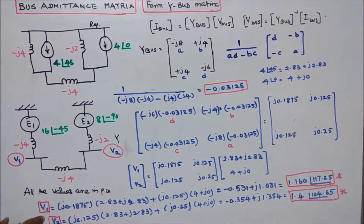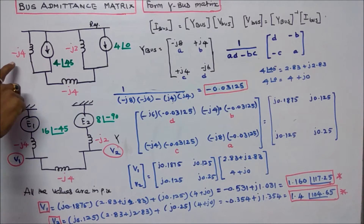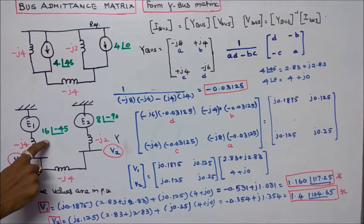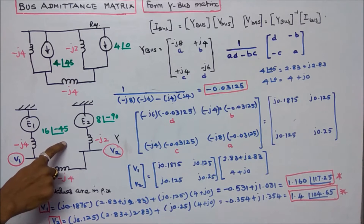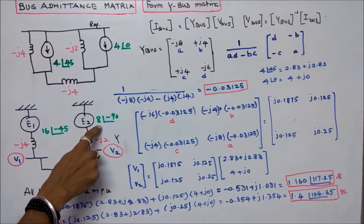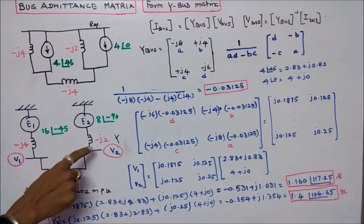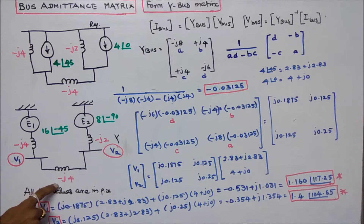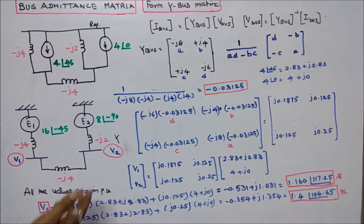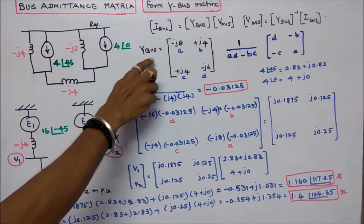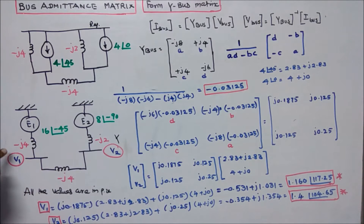Converting the same diagram into voltage sources: minus 4 into 4 gives 16 angle minus 45 degrees, and 8 angle minus 90 degrees. The impedances are minus J4, minus J2, and minus J4. All values are in per unit. We can now form the Y-bus matrix.